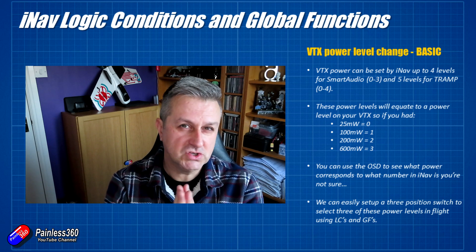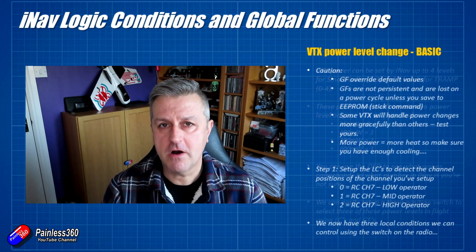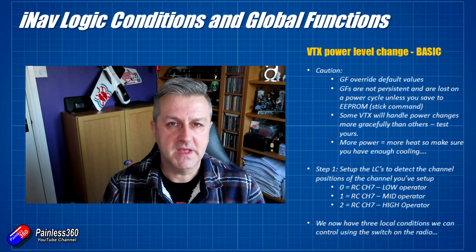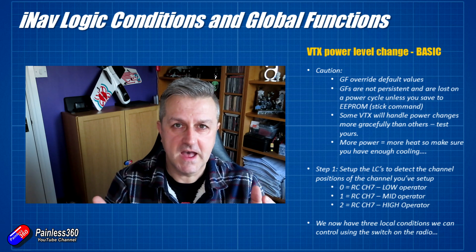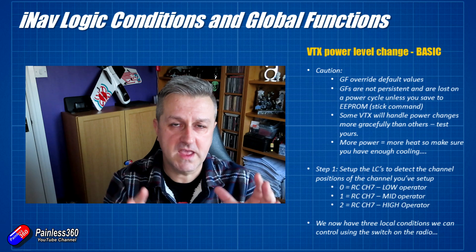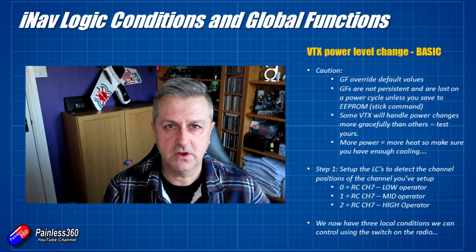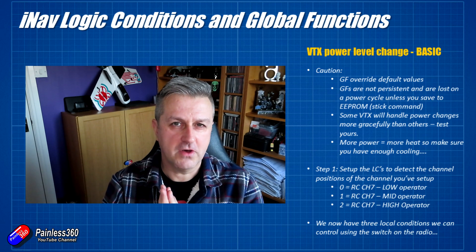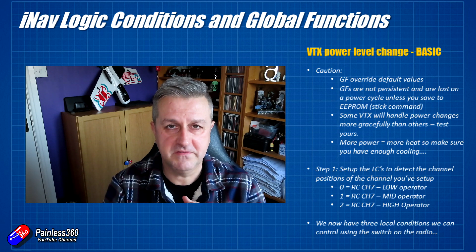Now that I know those values, I can use logical conditions and global functions to set them using the switch I've just configured. A couple of things to be aware of about global functions: they're not persistent. They do overwrite the default positions, but when you power cycle the system, it will not save them. So maybe you want to set it so the system always comes up at 25 milliwatts and then you can change it afterward. If you want to change the default settings, you can change stuff in EEPROM — see the iNav wiki and stick commands for how to save information to EEPROM. Also be aware that some video transmitters handle power changes more gracefully than others. Test yours on the bench so that the first time you try this in the field, it doesn't cause your FPV image to disappear.